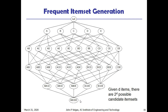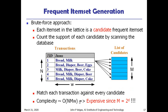Given D items, there are 2^D possible candidate item sets. In this case D equals five, so we have a total of 2^5 = 32 candidate item sets possible. For each item set we need to compute the support in order to find out whether it is a frequent item set or not, making this a computationally expensive task.